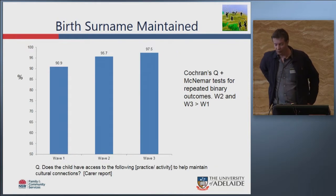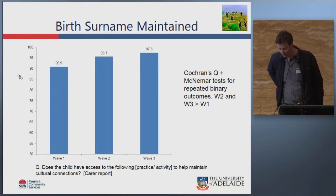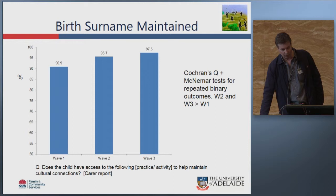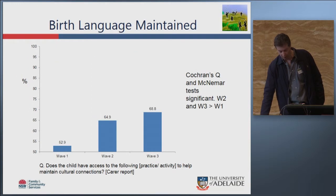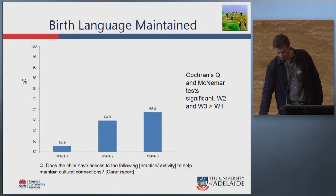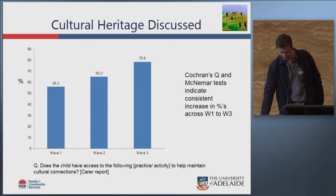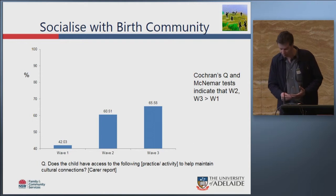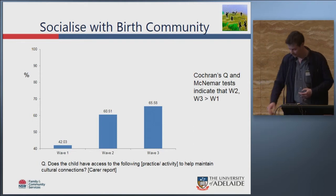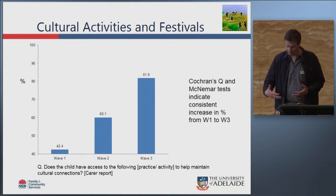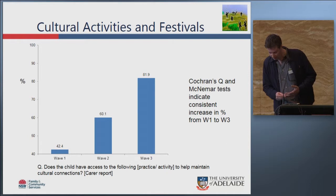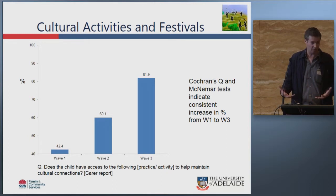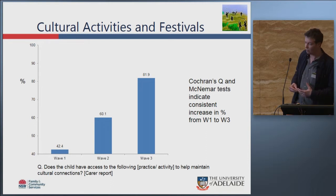Looking at specific cultural connection measures: birth name was maintained in 91 percent of cases at wave one, rising to 98 percent at wave three; birth language maintained went from 53 to 69 percent; cultural heritage discussed by the carer went from 56 to 79 percent; socialising with the birth community went from 42 to 66 percent; and involvement in cultural activities and festivals went from 42 to 82 percent. All these indicators are increasing over time, reflecting growing awareness of the importance of maintaining these connections.